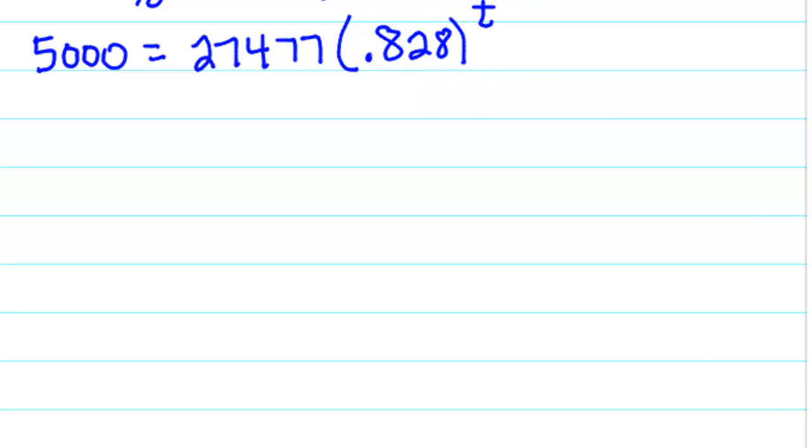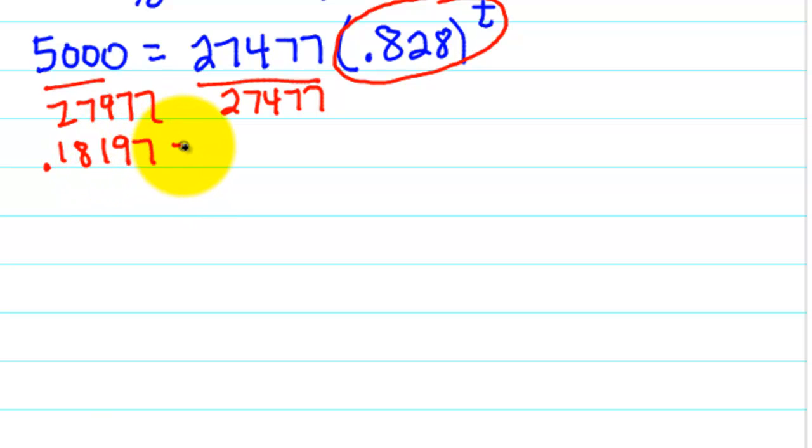So we're going to plug that in for value. Now this is an exponential function, so when we solve exponential functions, we want to get the exponential portion by itself. So we're going to divide by 27,477. So let's do that on the calculator here. And we get approximately 0.1897. And that equals 0.828 to the t power.